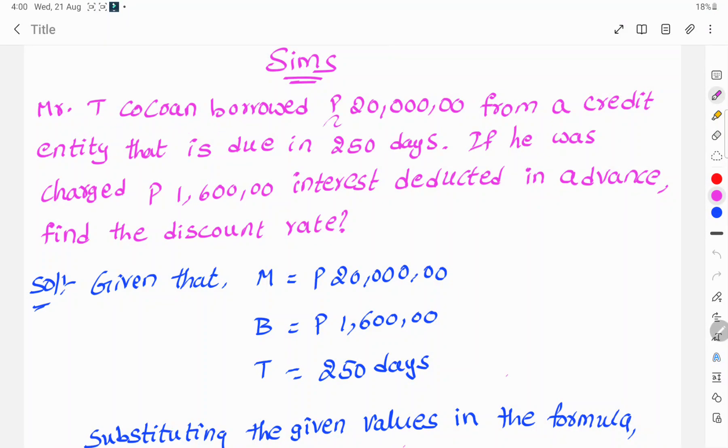Mr. T. Cocon borrowed 20 lakhs from a credit entity that is due in 250 days. If he was charged 1,60,000 interest deducted in advance, find the discount rate.